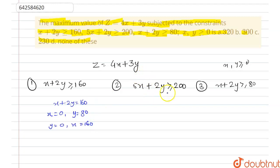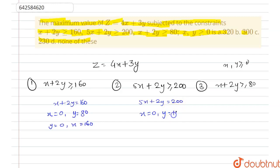Similarly, for the second equation, we draw the line 5x plus 2y = 200. When x equals 0, then y equals 100. And when y equals 0, then x equals 40.